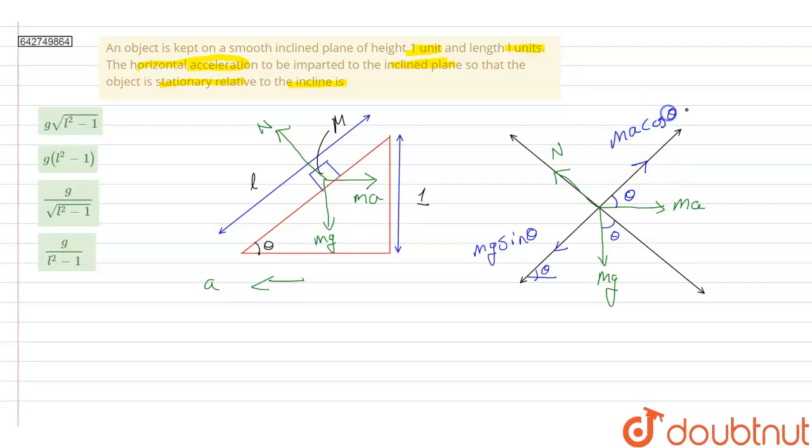For the box to remain stationary relative to the incline, I can equate these two forces. mg sine theta will be equal to ma cos theta. The mass will get cancelled.